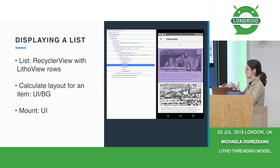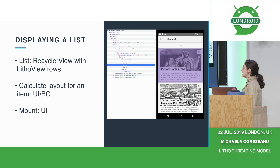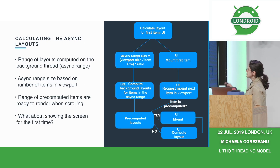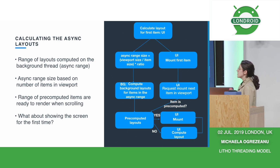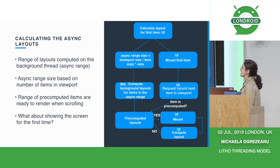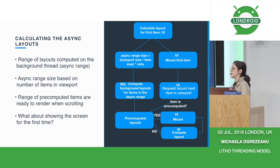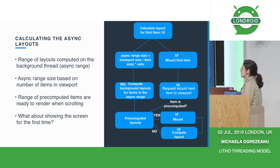We still always go back to the UI thread to actually mount that LithoView on screen. So the whole thing of RecyclerView doing onBindViewHolder and putting content on screen is still UI bound. But we can always calculate the layout for the component ahead of time on a background thread. As you open the list for the first time, we always calculate the layout for the first item in the list on the UI thread, for two reasons. When we schedule the async layout calculation, we need to know how many items we want to pre-compute.